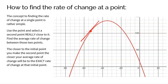Rate of change and slope are the same thing. To find the slope of a line, you need two points — and I don't have two points. So here's the idea: if I'm trying to find the rate of change at this point, what we do is find a second point really, really close to it — like right there — and then find the line that connects those two points.